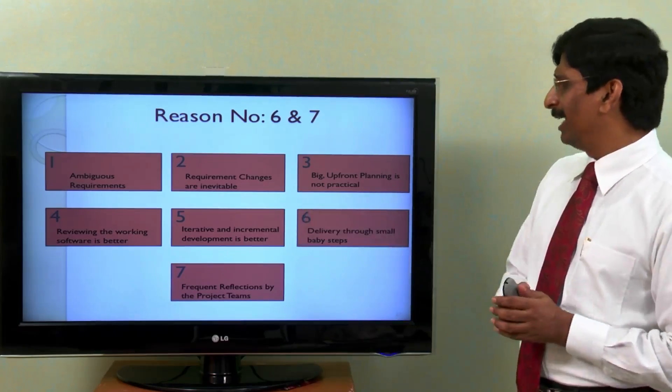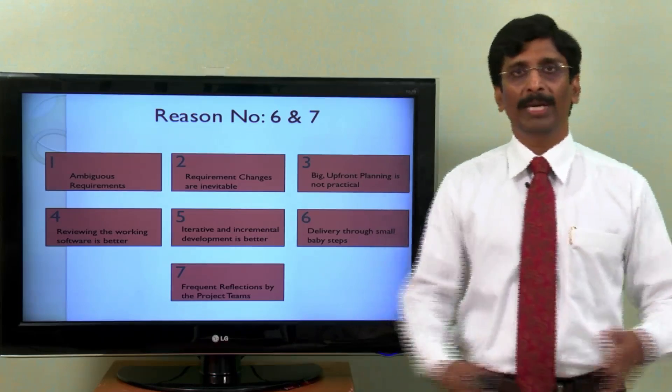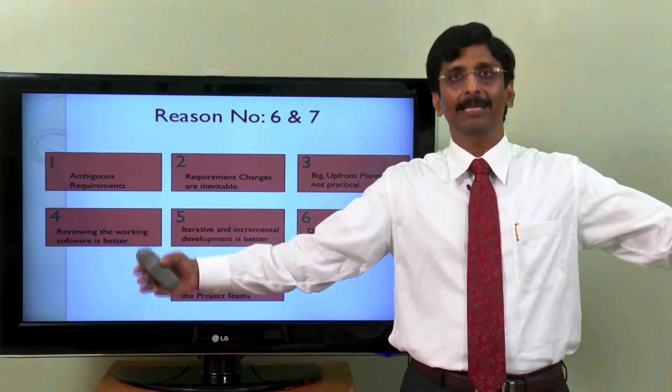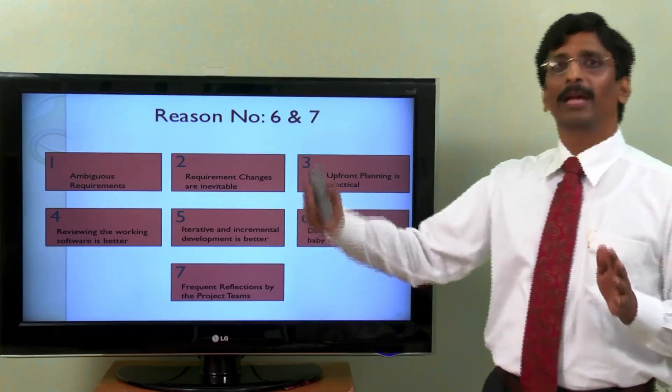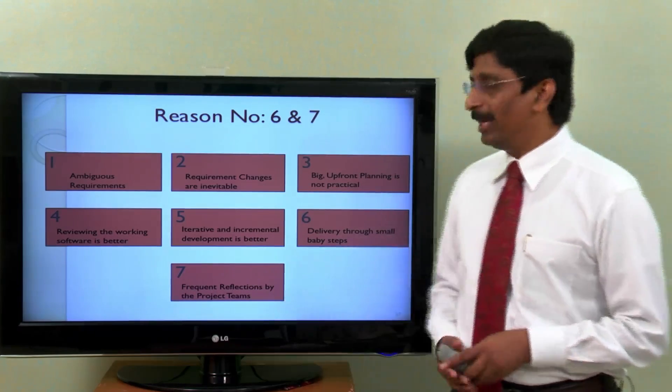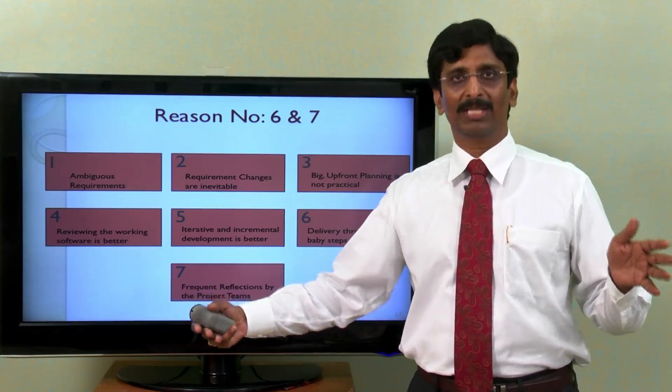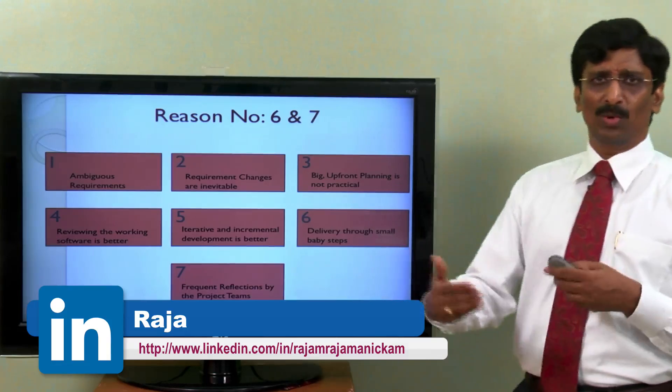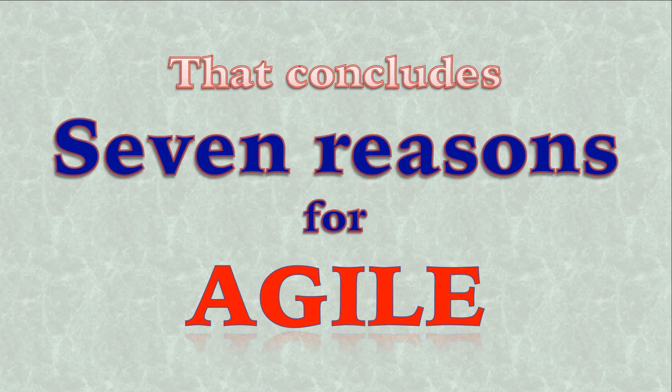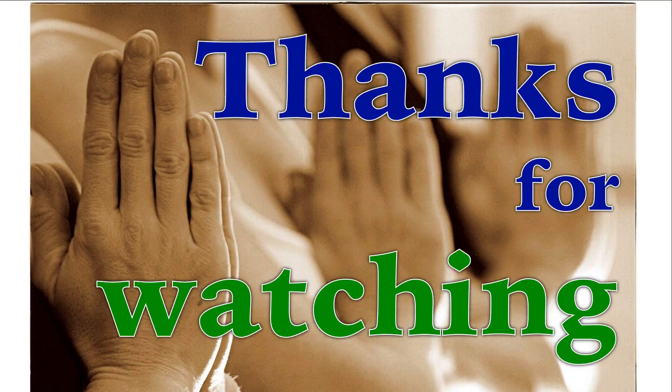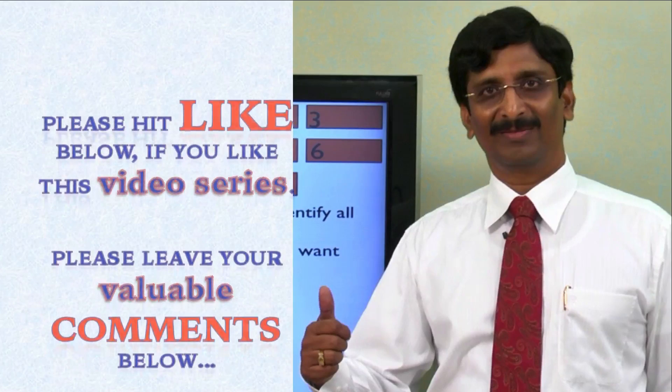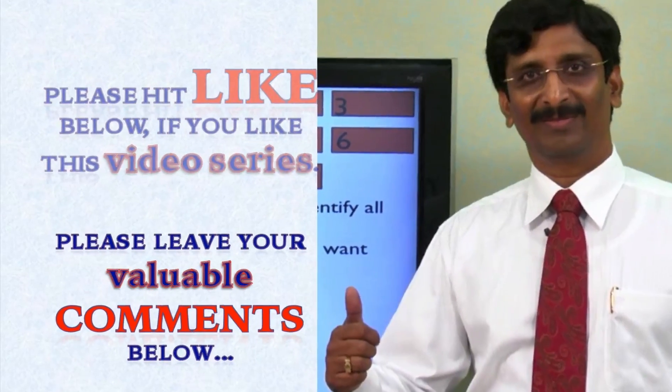And Agile, all Agile development life cycle is iterative and incremental. We don't do a complete big bang approach of development, no sequential approach. It is iterative and incremental. And the delivery is done through small baby steps. We already discussed that small iterations, every monthly iteration and frequent reflections by the development community along with the customers to understand what went right, what went wrong, what should we improve and what else do you need. Thank you.